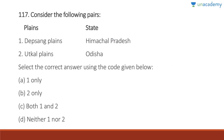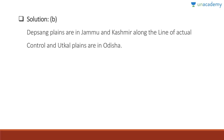Question 117: Deep Song Plains are in Jammu and Kashmir — wrong. Utkal Plains are in Odisha — correct. Answer is B, two only. The Depsang Plains are in Jammu and Kashmir along the Line of Actual Control, and the Utkal Plains are in Odisha.